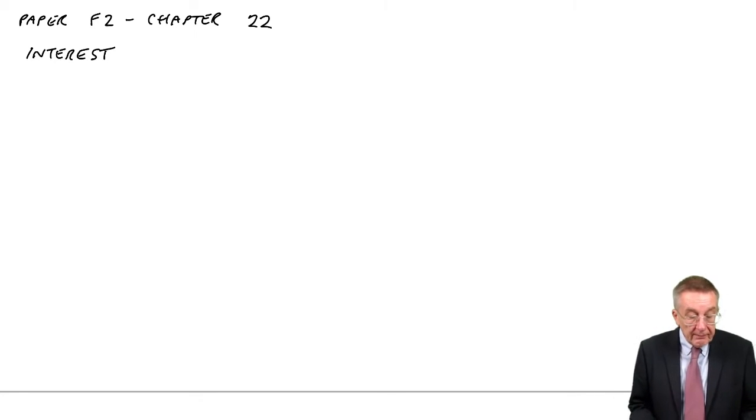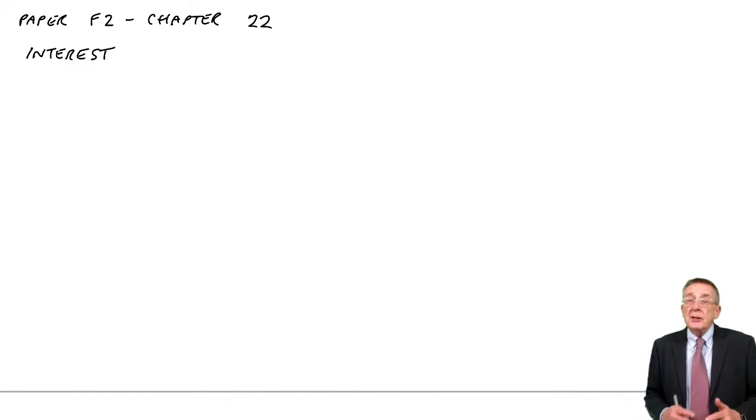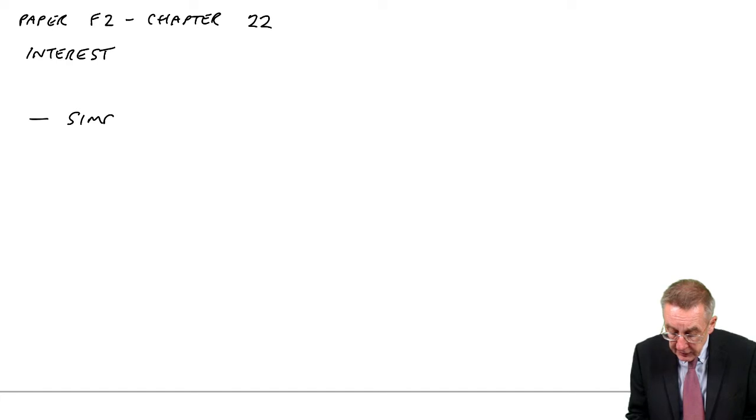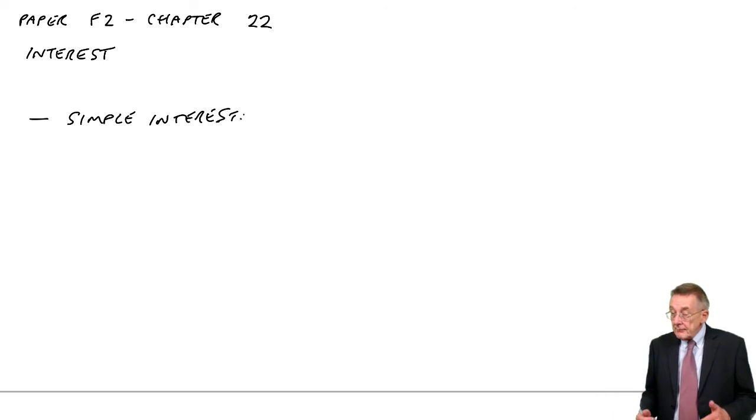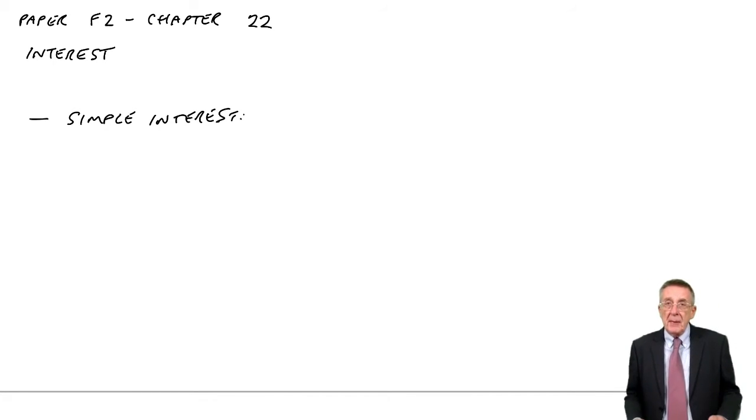First of all let's look at interest. If we deposit money in the bank we're likely to earn interest and there are two ways interest can be accounted for. The first, the much less common, is what we call simple interest, where you deposit money, you receive interest but the interest is effectively kept separate. It doesn't increase the amount on deposit.